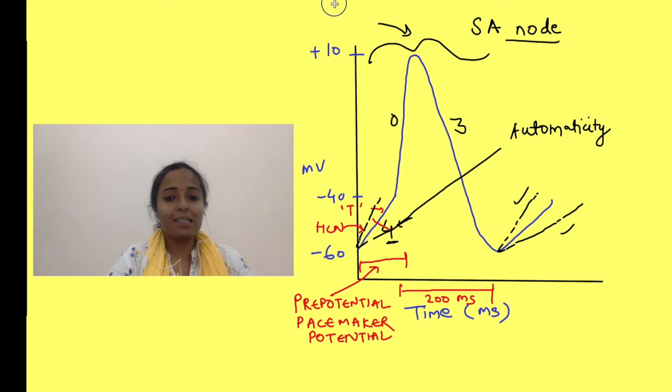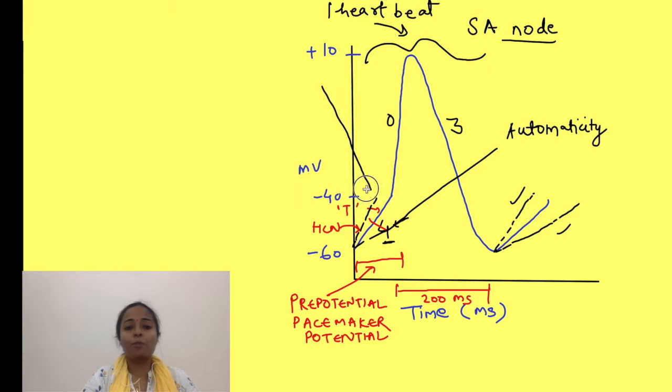Secondly, since each impulse leads to one heartbeat, this slope will determine the number of heartbeats per minute—that is, heart rate. The details of this concept we have discussed in another video which you can check out here.